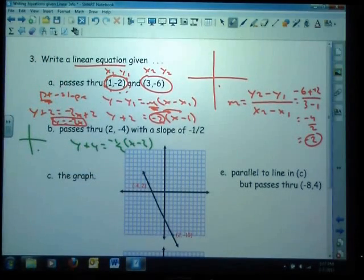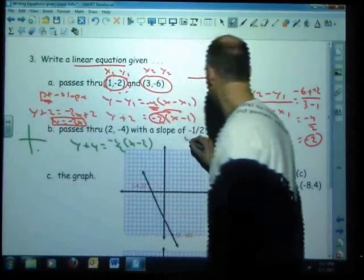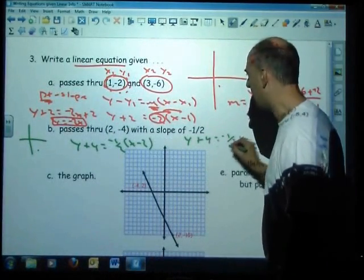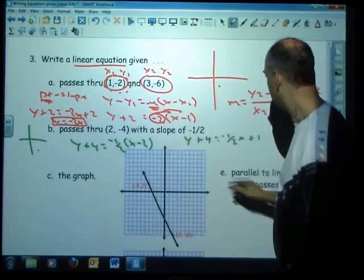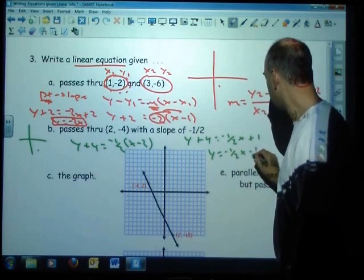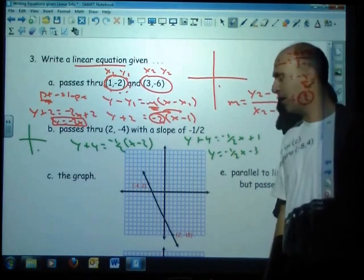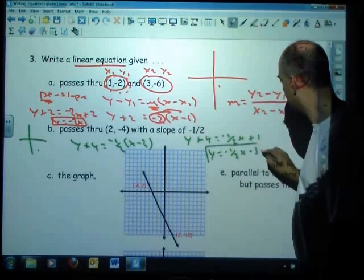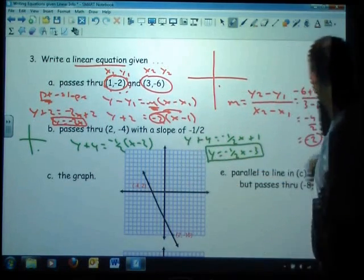From there I could simplify that down. See if I can do this here for you. Y plus 4 equals negative 1 half x, that would be a positive 1. Take away 4 from both sides, and we should get y equals negative 1 half x minus 3. So there we go.